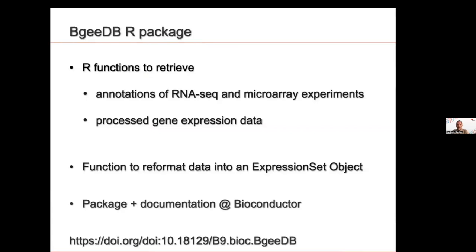We also have a package called BgeeDB, available from Bioconductor. With this package, you can ask, for instance, to give you all libraries available in the human brain or mouse brain, and retrieve the processed gene expression data. We provide functions to reformat your data into an ExpressionSet object, which is used in many packages for downstream analysis. You can refer to documentation on Bioconductor, and of course you can reach out to us if you have any questions.